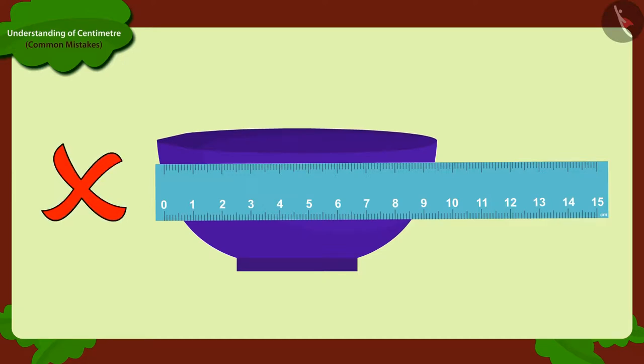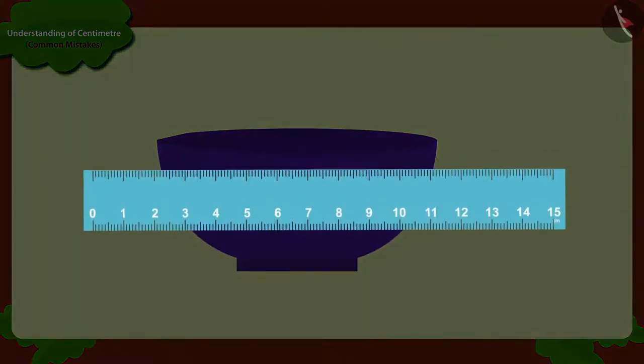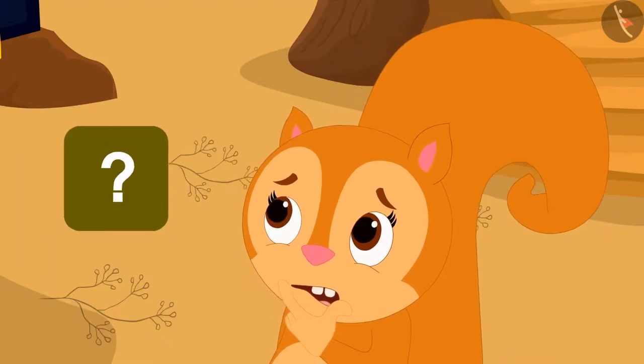Because we cannot measure its full length by doing so. Its curved portion and rear-side measure are omitted. And the ruler can also break. Then, how do we do this?